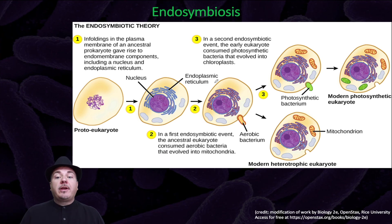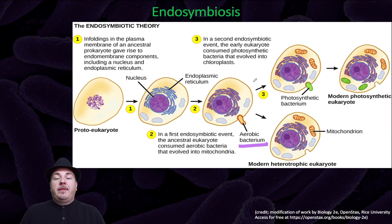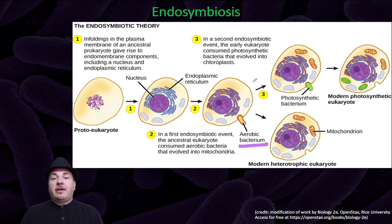Eukaryotic cells can eat prokaryotic cells — you can see this happen all the time. Far back in evolutionary history, there was a bacteria cell that could do aerobic cellular respiration. The eukaryotic cell went to eat that bacteria cell, but instead of digesting it, that bacteria cell started living inside the eukaryotic cell. That's called symbiosis. This was mutually beneficial: it was beneficial to the bacteria because it was now protected, and beneficial to the eukaryotic cell because that bacteria did aerobic cellular respiration, which means it produced ATP.